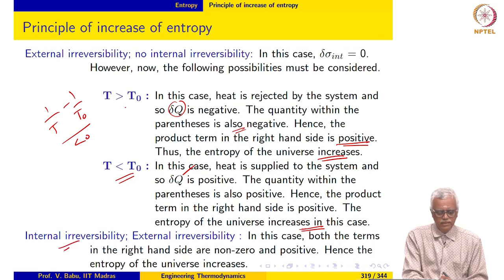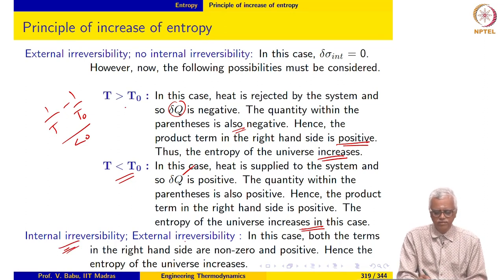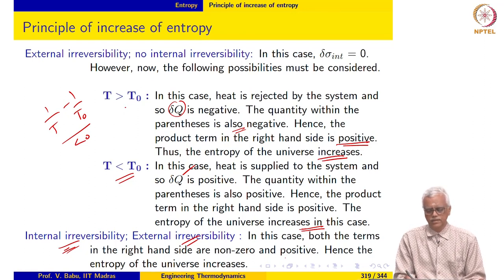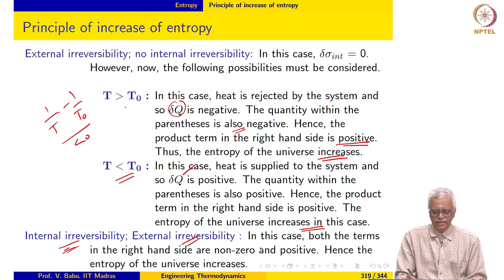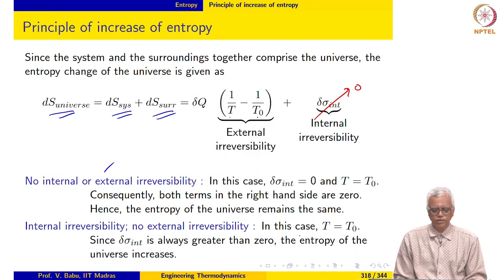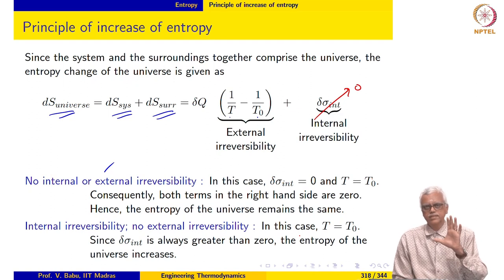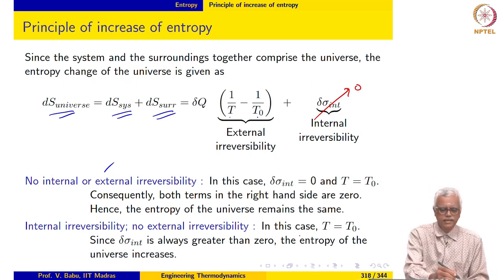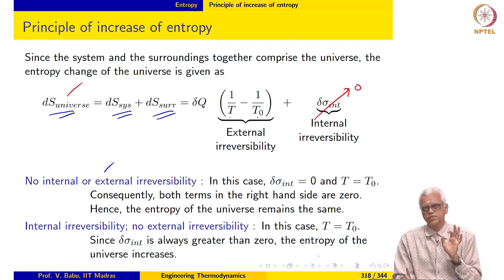The last possibility is when we have both internal and external irreversibility. In this case, both terms on the right-hand side are non-zero and positive. Hence, the entropy of the universe increases. We have considered all possible cases and concluded that the entropy of the universe either remains the same or increases.